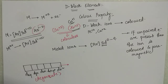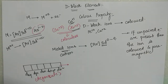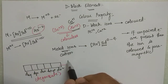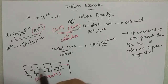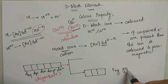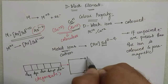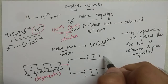But what happens is when this metal cation comes into contact with anions, the 5 orbitals which were initially of equal energy break into two groups. One is a group of three called the T2g group, and the other group contains the remaining 2 orbitals called the Eg group.